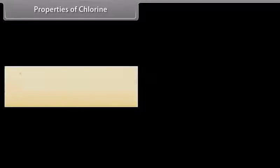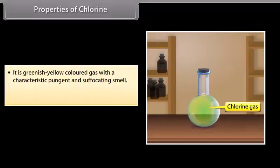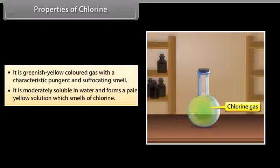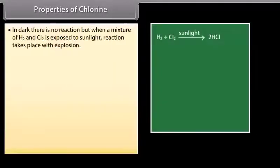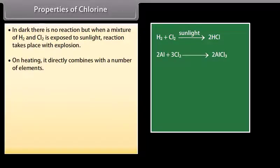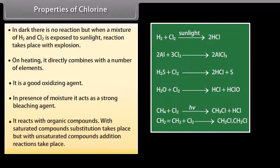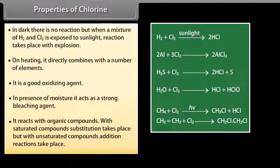Properties of chlorine: It is a greenish-yellow colored gas with a characteristic pungent and suffocating smell. It is moderately soluble in water, forming a pale yellow solution called chlorine water. In dark, there is no reaction, but when a mixture of H2 and Cl2 is exposed to sunlight, the reaction takes place with explosion. On heating, it directly combines with a number of elements. It is a good oxidizing agent and in presence of moisture acts as a strong bleaching agent. With saturated compounds, substitution takes place, but with unsaturated compounds, addition reactions take place.